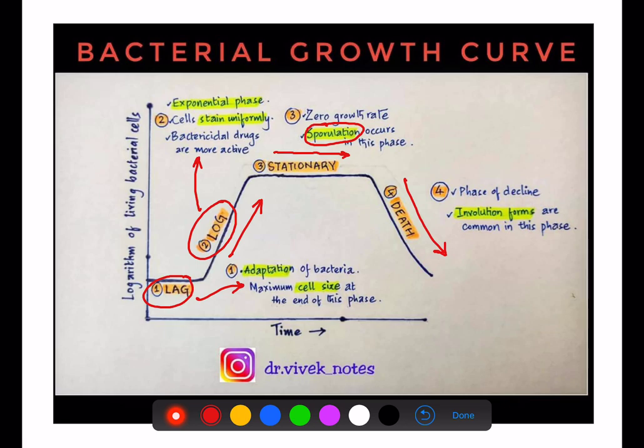To summarize: lag phase, logarithmic phase (also called exponential phase), stationary phase (also called zero growth rate phase), and death phase (also called phase of decline).